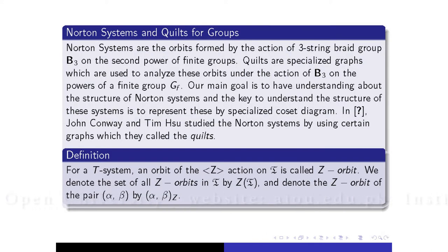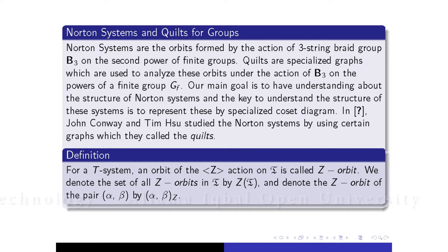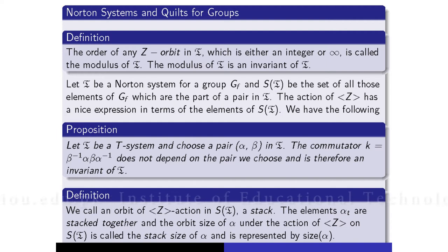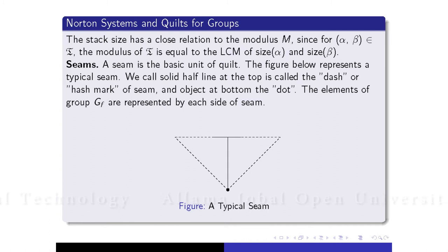Norton systems and quilts for groups — a short preview about quilts. There are rules for how quilts can be drawn for groups. First we define what a T-system is, and then what the order of a Z-orbit is. This is the main proposition for orbits formed by the action of B3 on a group; the orbit of a Z-action is called a seam. These definitions related to the action of B3 on groups were studied by John Conway and Tim Ho.